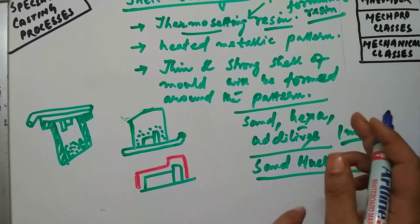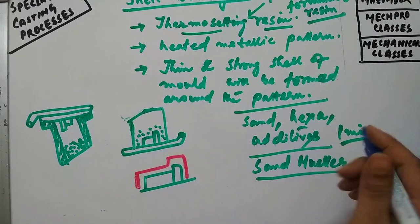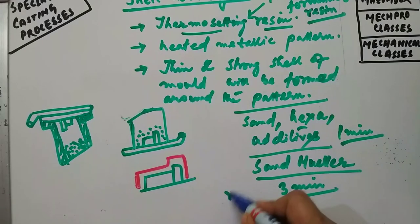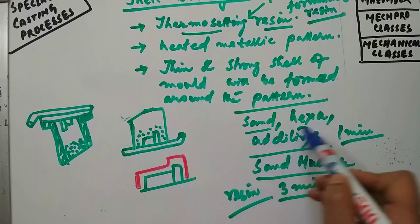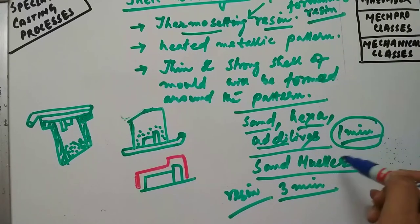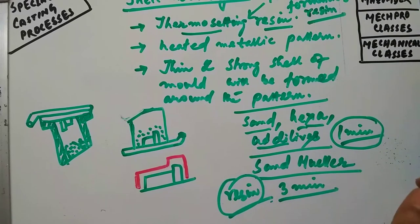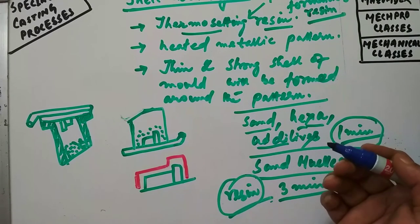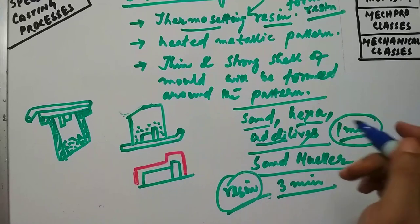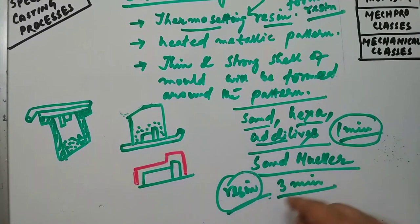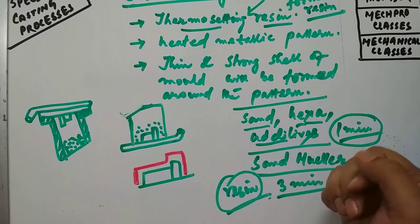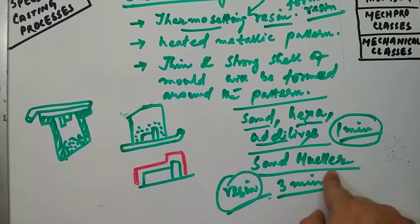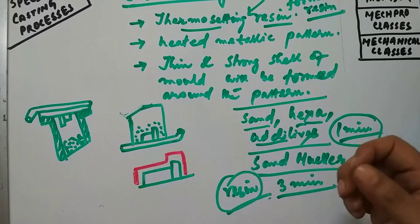Then the liquid resin has to be added and mixed, and you have to continue the mixing process for three minutes after adding the resin. After that, cold or warm air has to be introduced into the muller machine, and the mixing has to be continued till all the liquid is removed from the mixture and coating of the grains is achieved to the desired degree.